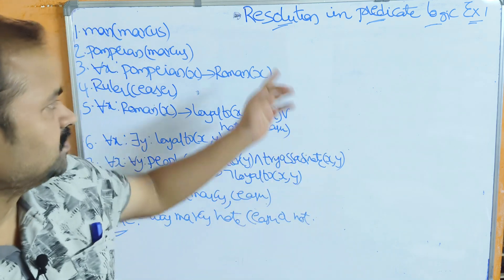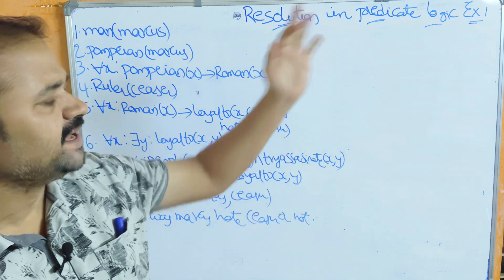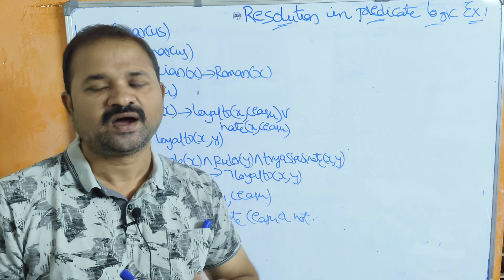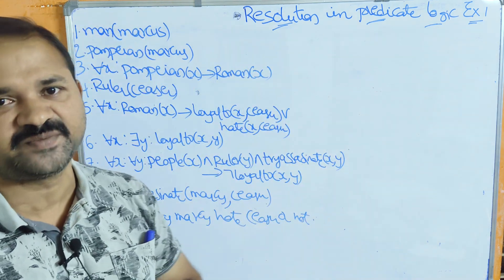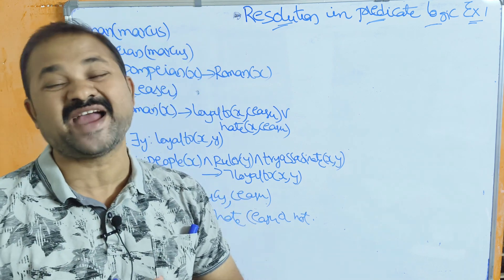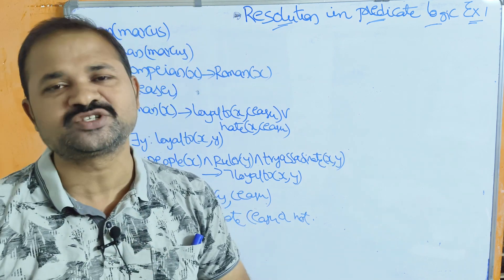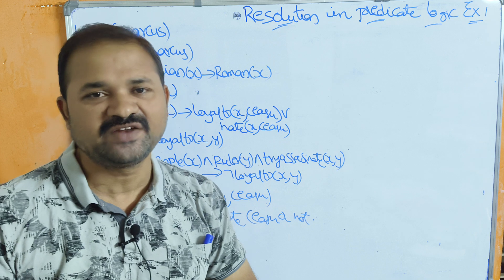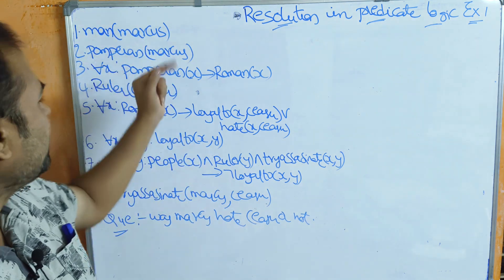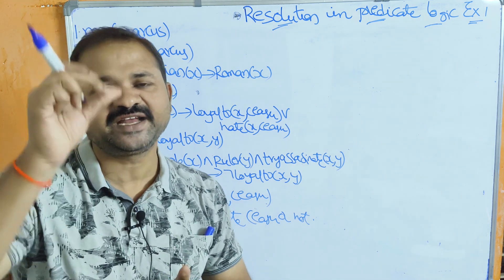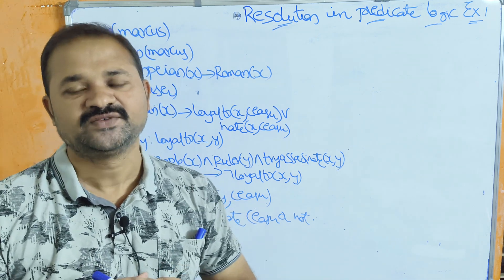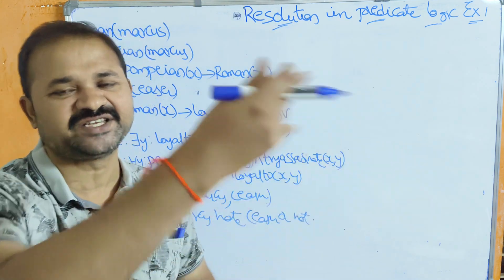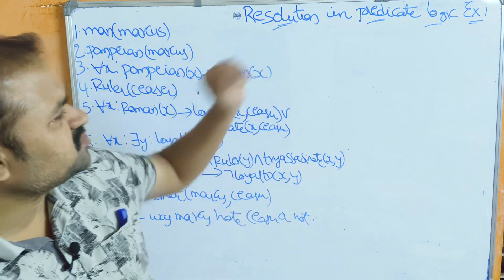Now let us discuss resolution in predicate logic with an example. These are the well-formed formulas which are already given. In a previous video we have seen this example, where some statements or facts are given and we need to convert those statements into well-formed formulas. The first step in resolution is to convert these well-formed formulas into clause form.